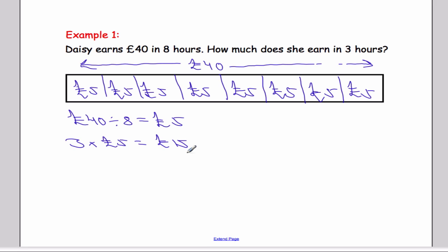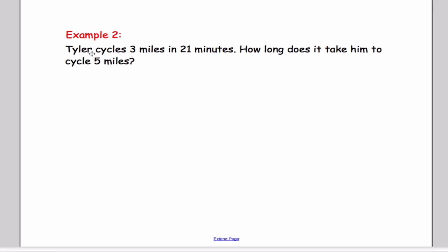Let's have a look at the second example. Suppose Tyler cycles 3 miles in 21 minutes. How long does it take him to cycle 5 miles? We're assuming here that Tyler can maintain his speed and doesn't get tired when he's cycling.